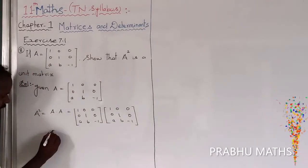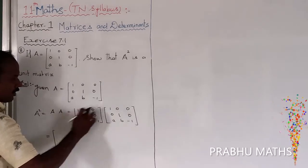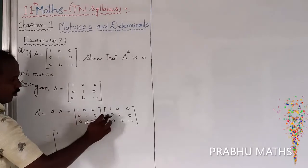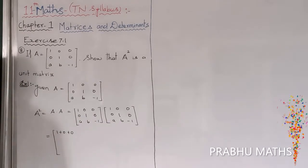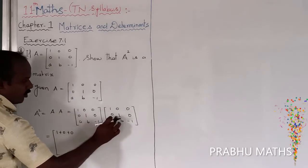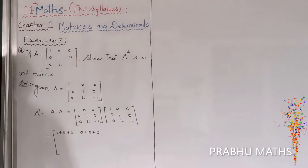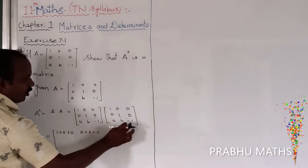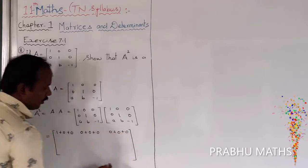That is equal to this matrix multiplication. First row, first column: 1 into 1 is 1, plus 0 into 0, plus 0 into A — equals 1. First row, second column: 1 into 0 plus 0 into 1 plus 0 into 0 — equals 0. First row, third column: 1 into 0 plus 0 into 0 plus 0 into minus 1 — equals 0. First row completed.